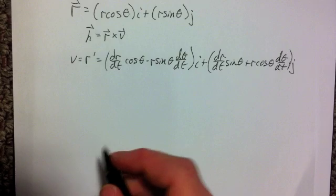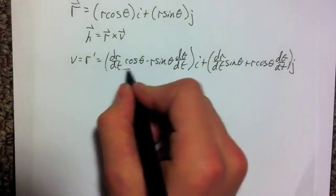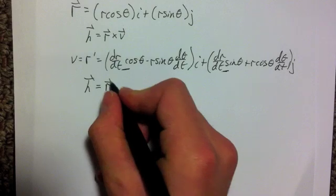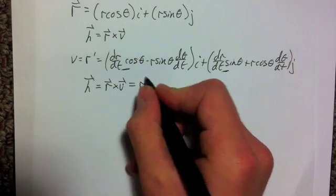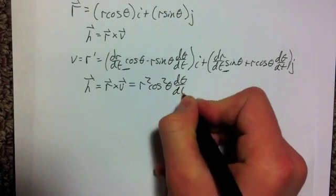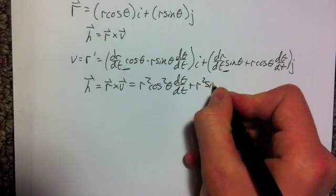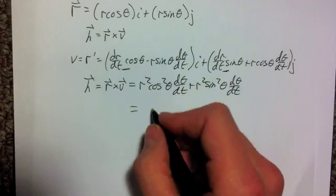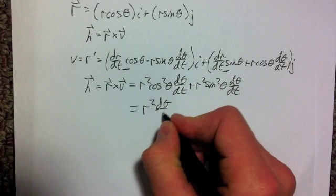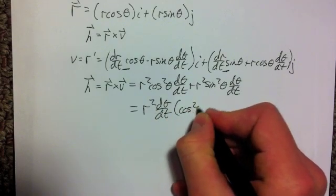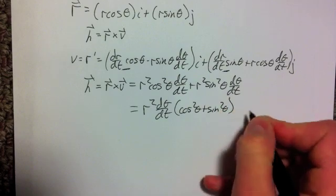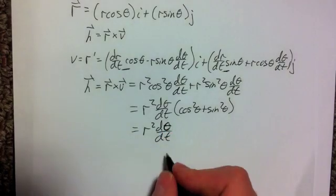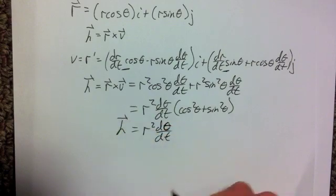Once this cross product is taken, you'll see that certain terms cancel out, and we will be left with h being equal to r cross v, which is equivalent to r² cos²θ dθ/dt plus r² sin²θ dθ/dt. With a quick factoring out, we're left with r² dθ/dt times (cos²θ + sin²θ), which we know equals 1, and we're left with r² dθ/dt equal to the vector h.